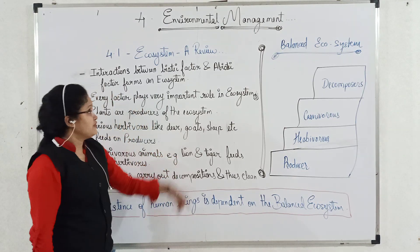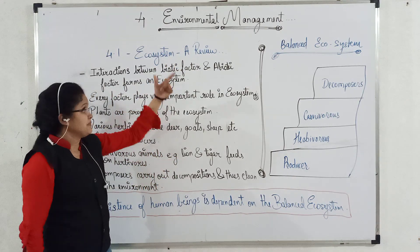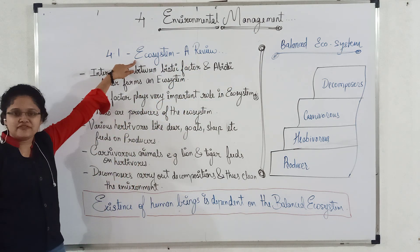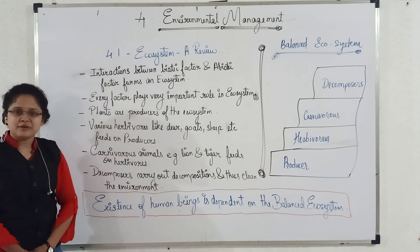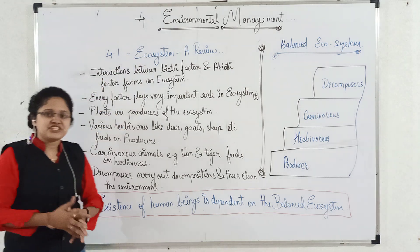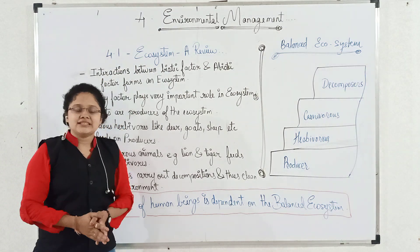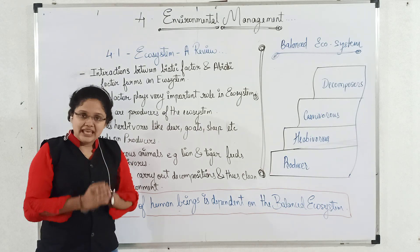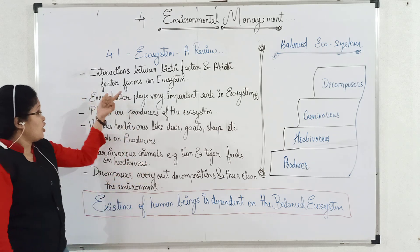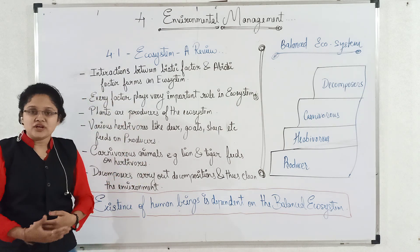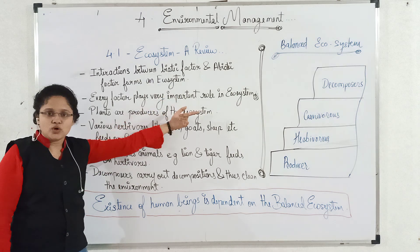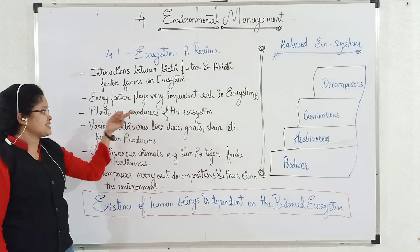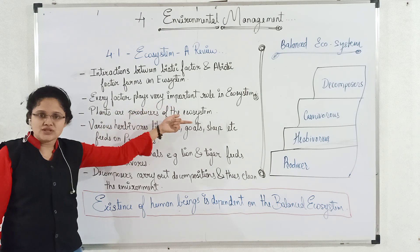Students, we will learn the first point of this chapter. Recall the definition of ecosystem: interaction between abiotic factors and biotic factors forms an ecosystem. Every organism or every factor plays a very important role in the ecosystem. Plants are called as producers and are the producers of the ecosystem.